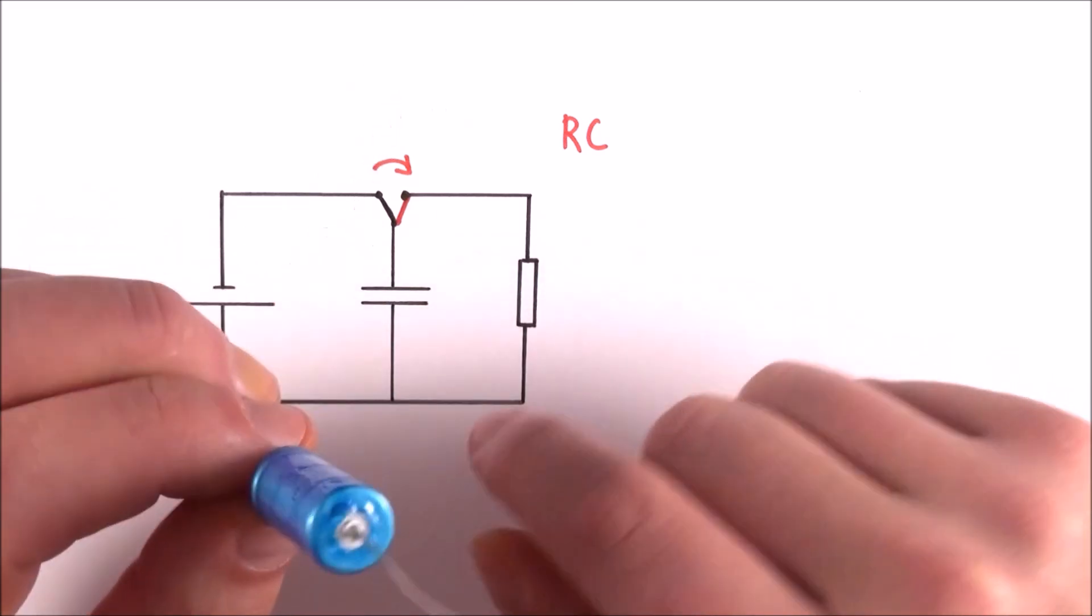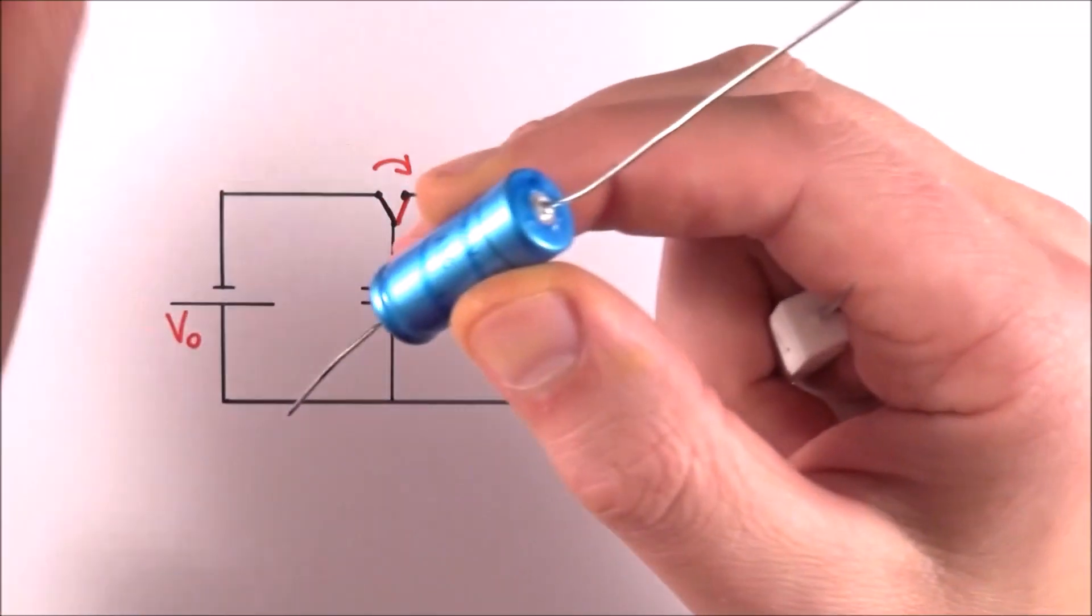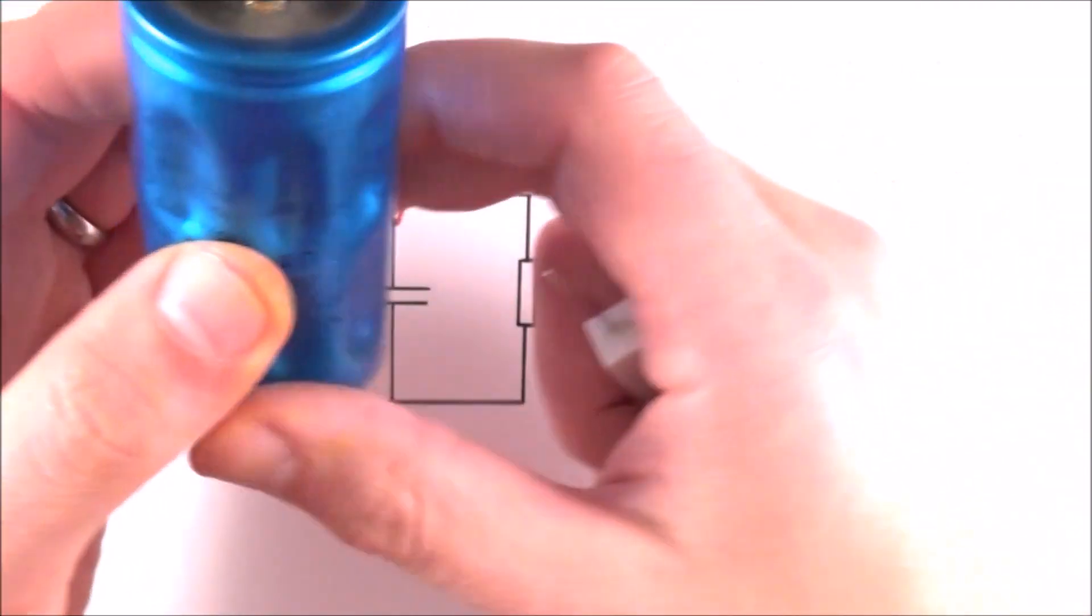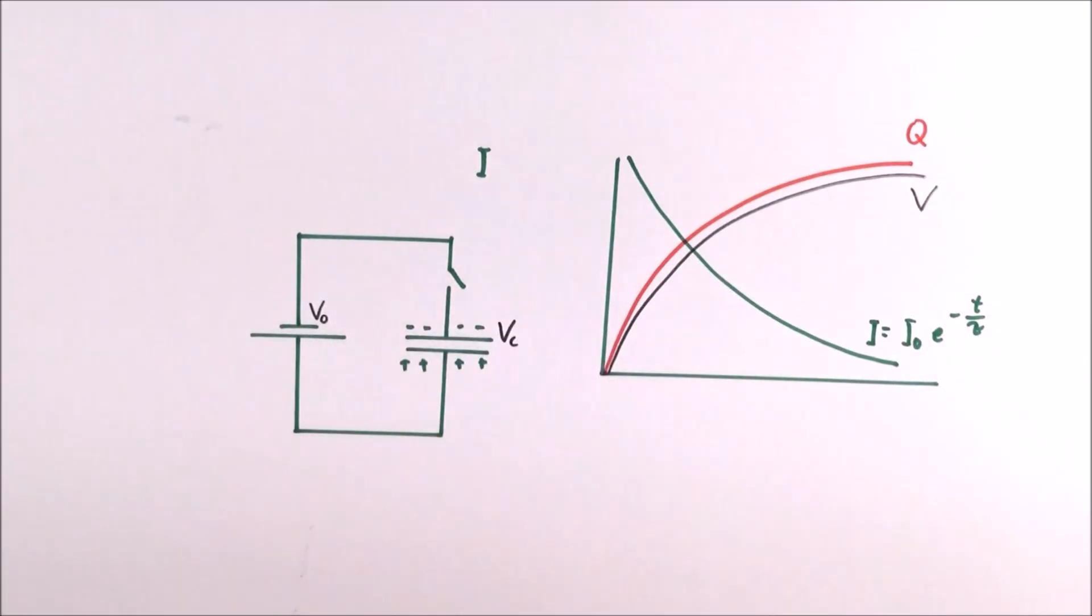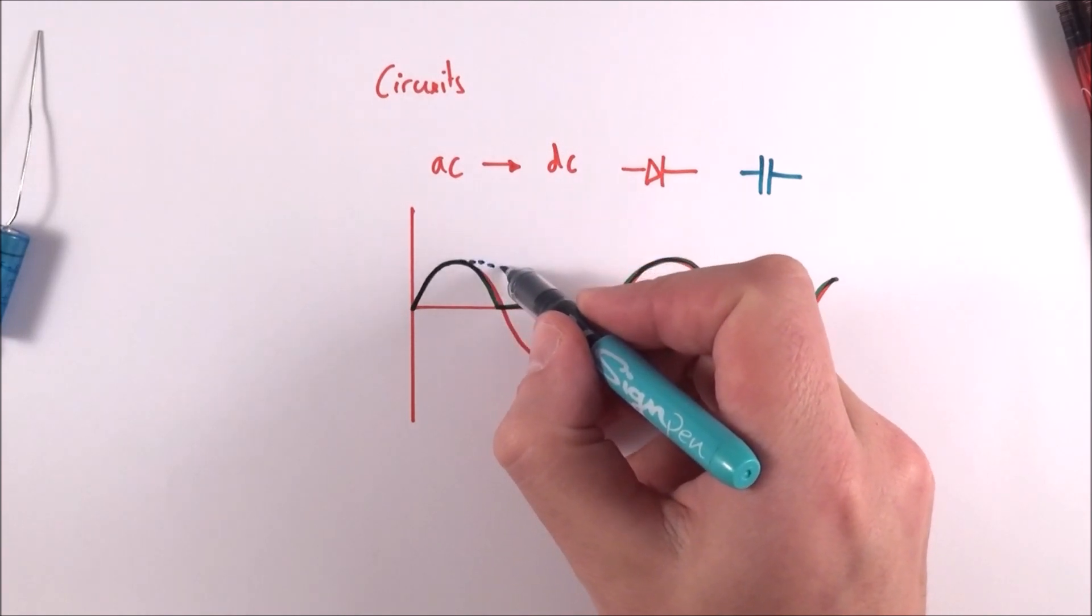We can look at if we have an RC circuit where we have a capacitor discharging through a resistor, how the charge, the current, and the potential difference change over time as we discharge a capacitor or also charge it up in the first place.